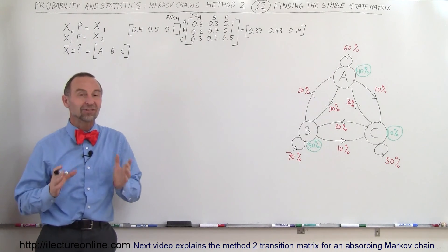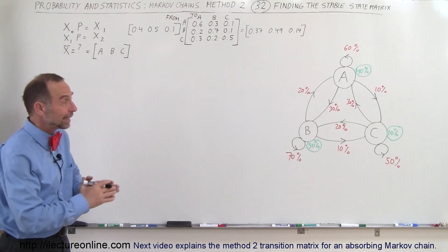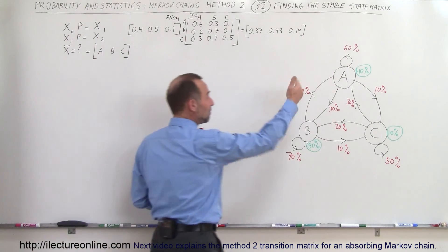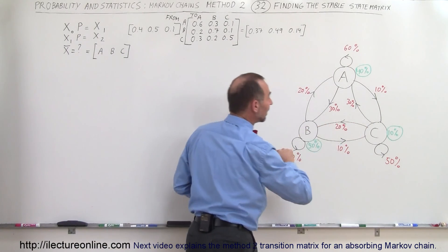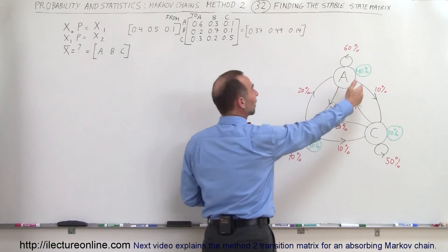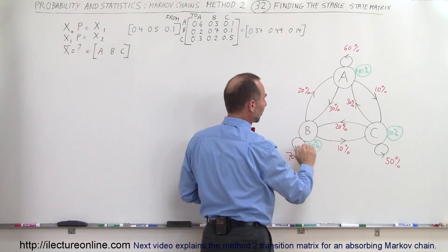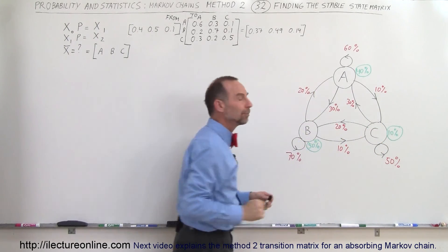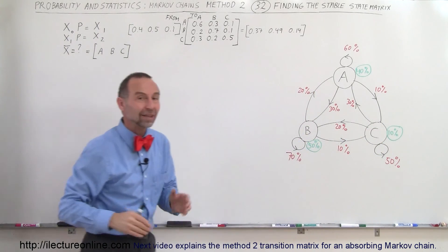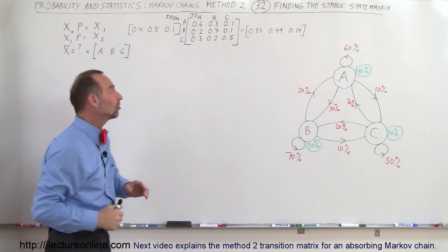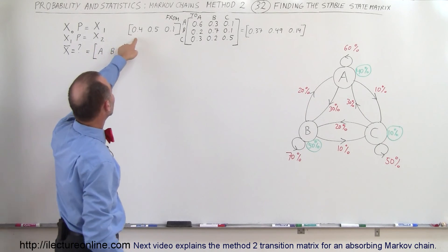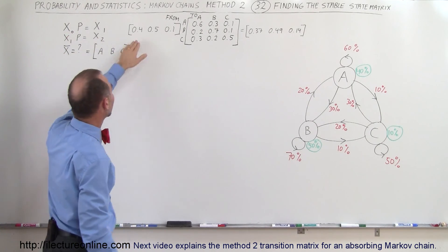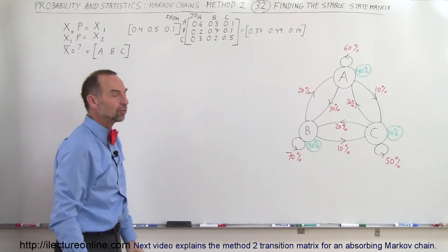What do we mean by the stable state matrix? Here's our example where we have three stores A, B and C. Store A has 40% of the customers, store B has 50% of customers and store C has 10% of customers. That is the initial state, and this is what we call our initial state matrix — X sub naught.